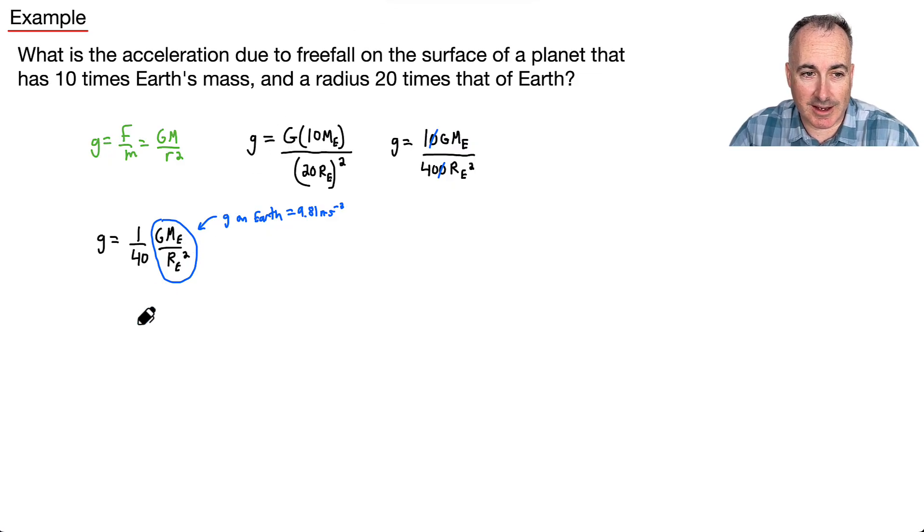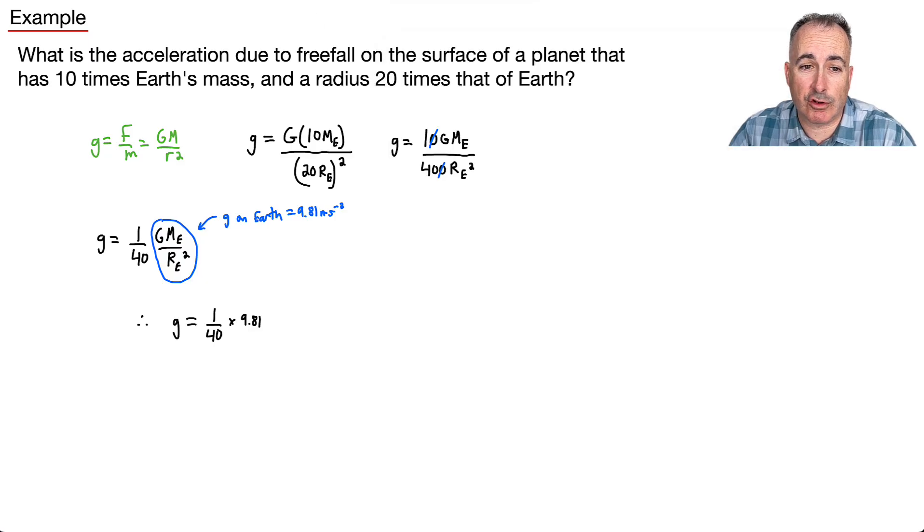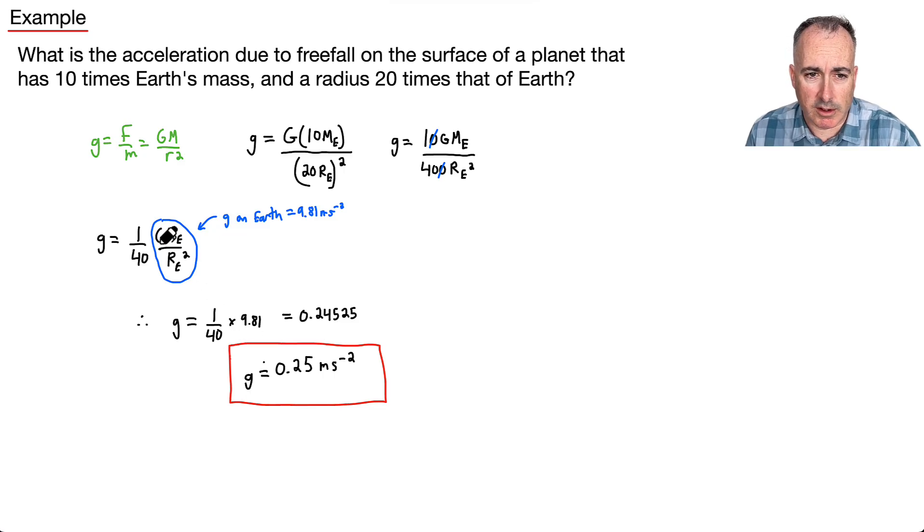So that means then I can say g equals 1 over 40 times 9.81. So let me just do that on my calculator. I'll just do 9.81 divided by 40, and I end up with an answer of 0.24525. Let's see how many significant figures to use. I've got 2 and 2 here, so I'll say g is approximately equal to 0.25 meters per second squared. So again, quite a bit smaller than the Earth. I mean, on Earth, it's 9.81. You can see it right here, it says 1/40th what it is on Earth. But there we go. We're done. Thank you.